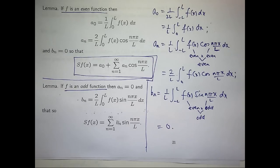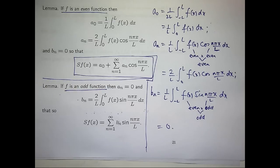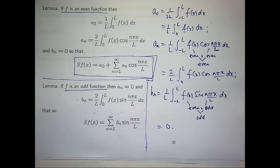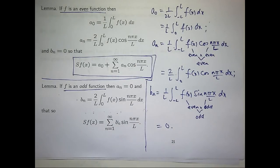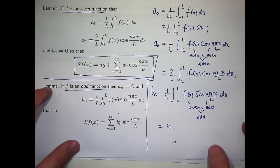In an exam, if you have an odd function and want to calculate the Fourier series, you can just write down a₀ = 0, aₙ = 0 — you don't have to do those calculations; just justify why. Students love it: one calculation rather than three. But you've got to be on top of your odd and even functions. You won't be given these shortcuts in the exam, so it's up to you to apply them.